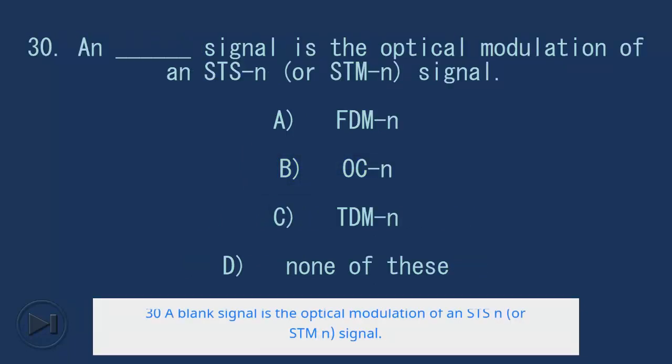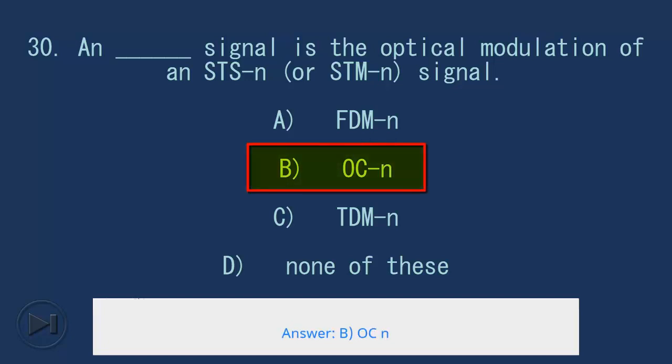30. A blank signal is the optical modulation of an STS-N or STM-N signal. A. FDM-N, B. OC-N, C. TDM-N, D. None of these. Answer: B. OC-N.